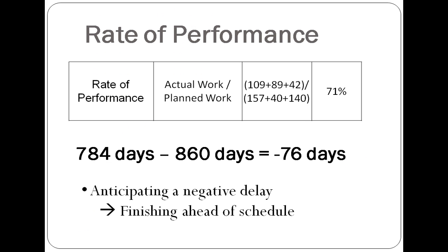The rate of performance based on completed tasks can be calculated by dividing the duration of actual work by the planned work. Because all three initial subtasks were dependent on completion of the previous, they are all on the critical path. The actual durations of the first three completed subtasks are summed and divided by the sum of planned durations by PERT. Specifically, this would be the sum of 109, 89, and 42, divided by the sum of 147, 40, and 140. The result is multiplied by 100, and our rate of performance is thus 71%.